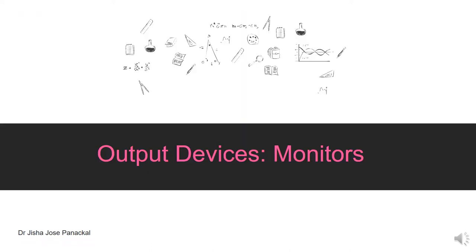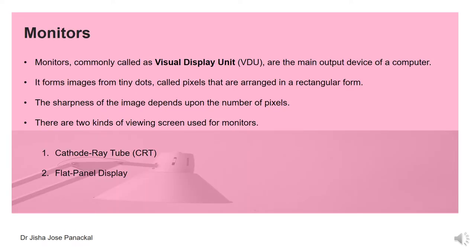Today we will learn more about monitors. Monitors are commonly called as visual display unit or VDU, and these are considered the main output device of a computer. It forms images from tiny dots called pixels that are arranged in a rectangular form visible on the screen. The sharpness of the image depends upon the number of pixels. There are two kinds of viewing screens used for monitors: cathode ray tube (CRT) or flat panel display.